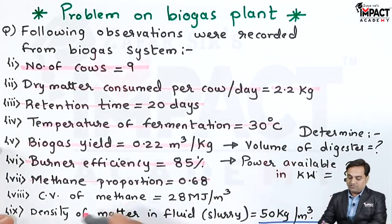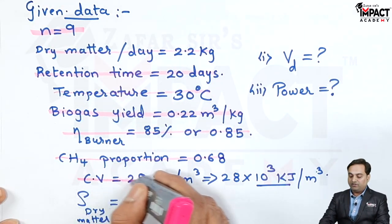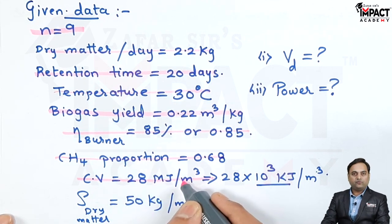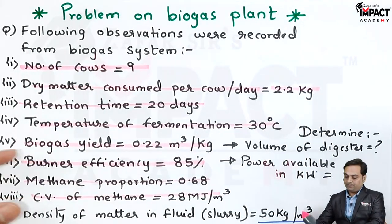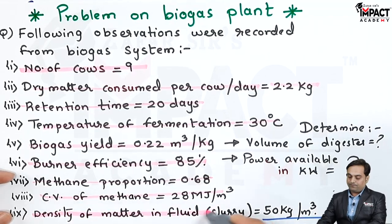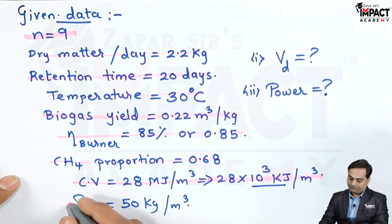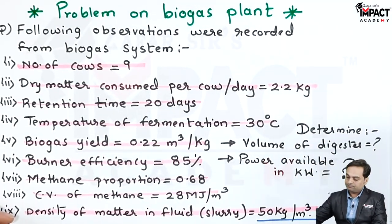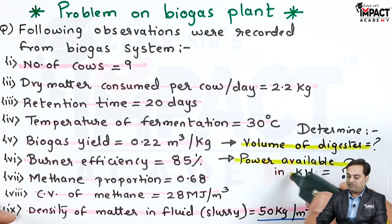The calorific value of methane is given as 28 mega joule per meter cube, meaning 1 meter cube of methane will give us an energy of 28 mega joule. It has to be converted into kilo joule by multiplying with 1000 or 10 raised to 3. Next, the density of the dry matter — the density of the cow dung — is 50 kg per meter cube. The question asks us to determine the volume of the digester and the power available from this biogas plant in terms of kilowatts.